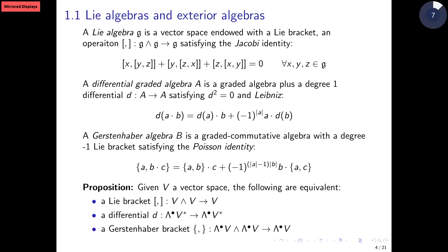The result is that these three pieces of data are equivalent: either a Lie bracket on the vector space, a degree-one differential on the exterior algebra of the dual — which from the graded geometry viewpoint we should think of as noncommutative functions — or equivalently a Gerstenhaber bracket on the exterior algebra of the vector space. This is very basic, but it's going to be at the core of our results.